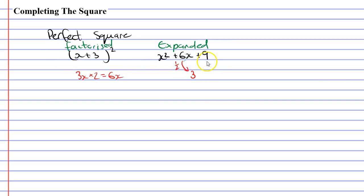And the reason we're doing this is because if you look at the 9 at the end, how did we get that 9? Well, we squared the 3. 3 times 3 was 9. So, now that we found the 3 by halving the 6, we simply square the 3 to get the 9.